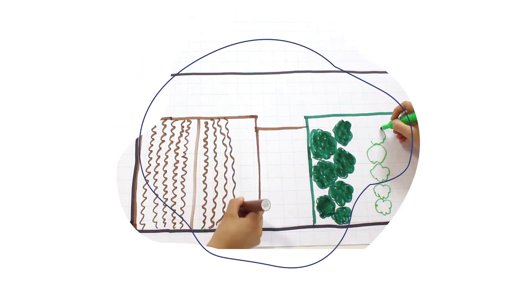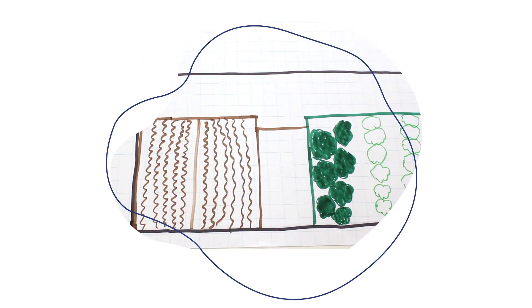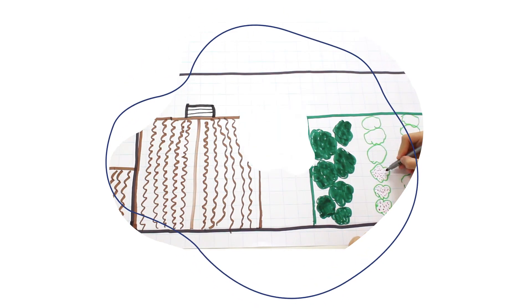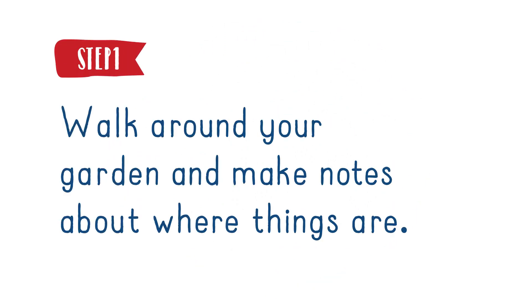Alicia and Vlad decided to create a map of their garden. If you want to do the same, follow their lead. Step 1: Walk around your garden and make notes about where things are. Even drawing a rough draft can really help. You can also ask an adult to help you locate your house using Google Maps or a similar site that has a satellite view.